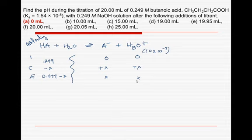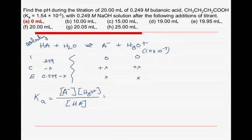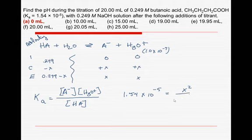The value for butanoic acid's Ka is given up there in the problem. But let's write the expression first. Ka would be the A minus concentration times the H3O plus concentration divided by the HA concentration at equilibrium. Ka is 1.54 times 10 to the minus 5 and that is going to be equal to X squared over 0.249 minus X.